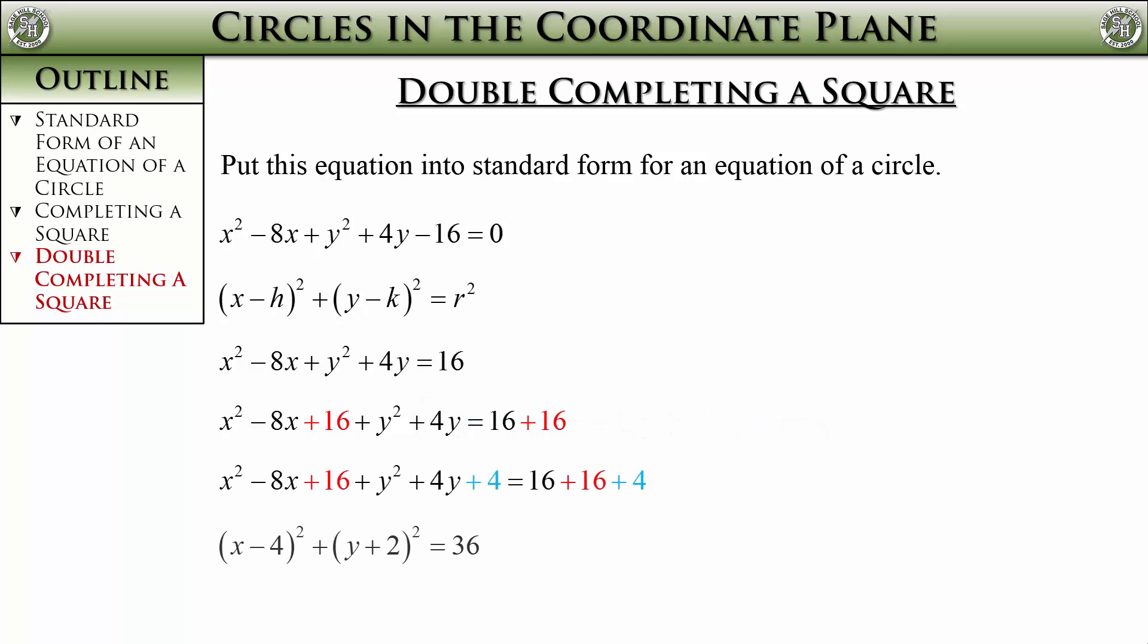From here, we factor and simplify. That will get us to our standard form for a circle. Once you get enough practice with doing this, you will be able to do both parts at the same time. Lastly, this wasn't part of the problem asked, but incidentally, from this equation, it should be quick to figure out that the center of this circle is at 4, negative 2, and it has a radius of 6 units.